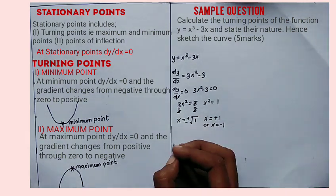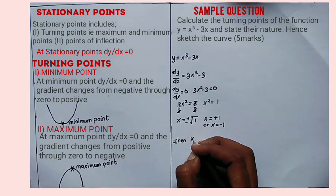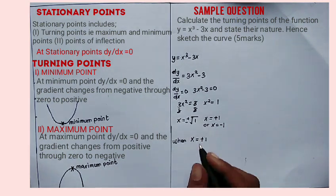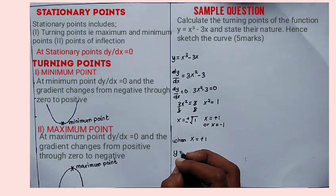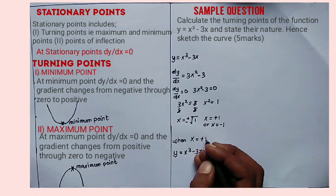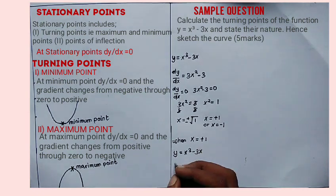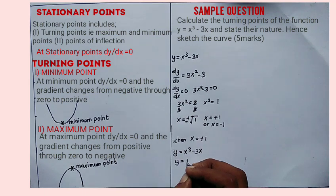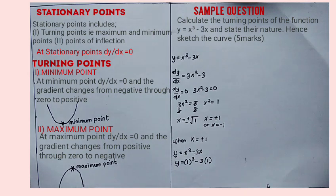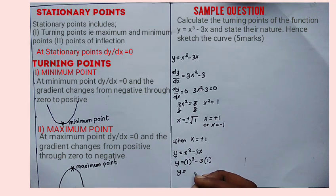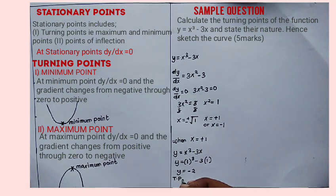We are going to look at when x is positive 1. Substitute it into the equation of the curve: y is equal to x cubed minus 3x. So y is equal to 1 cubed minus 3 times 1. That is 1 minus 3, so y is equal to negative 2. The first turning point will be (1, negative 2).